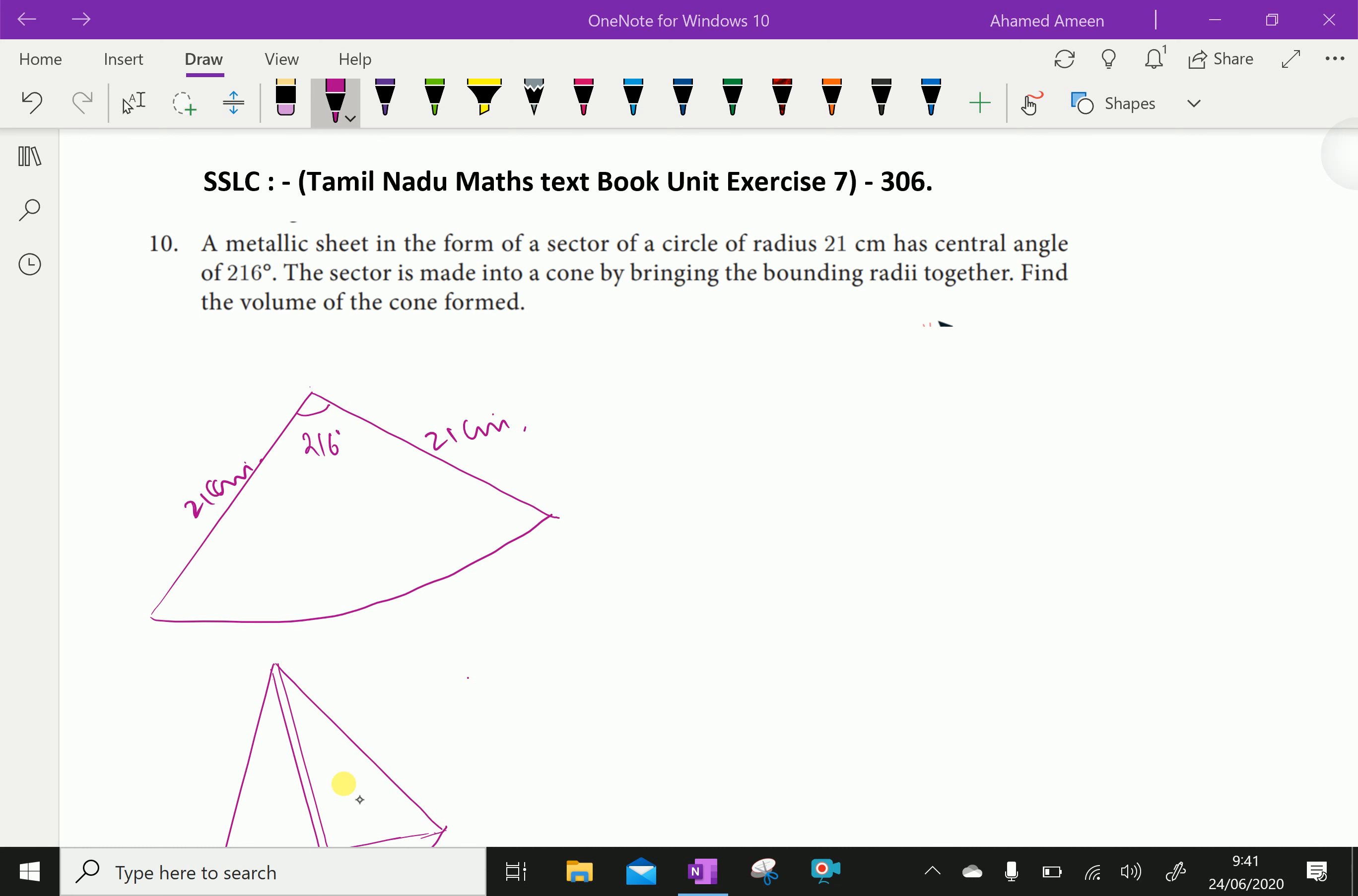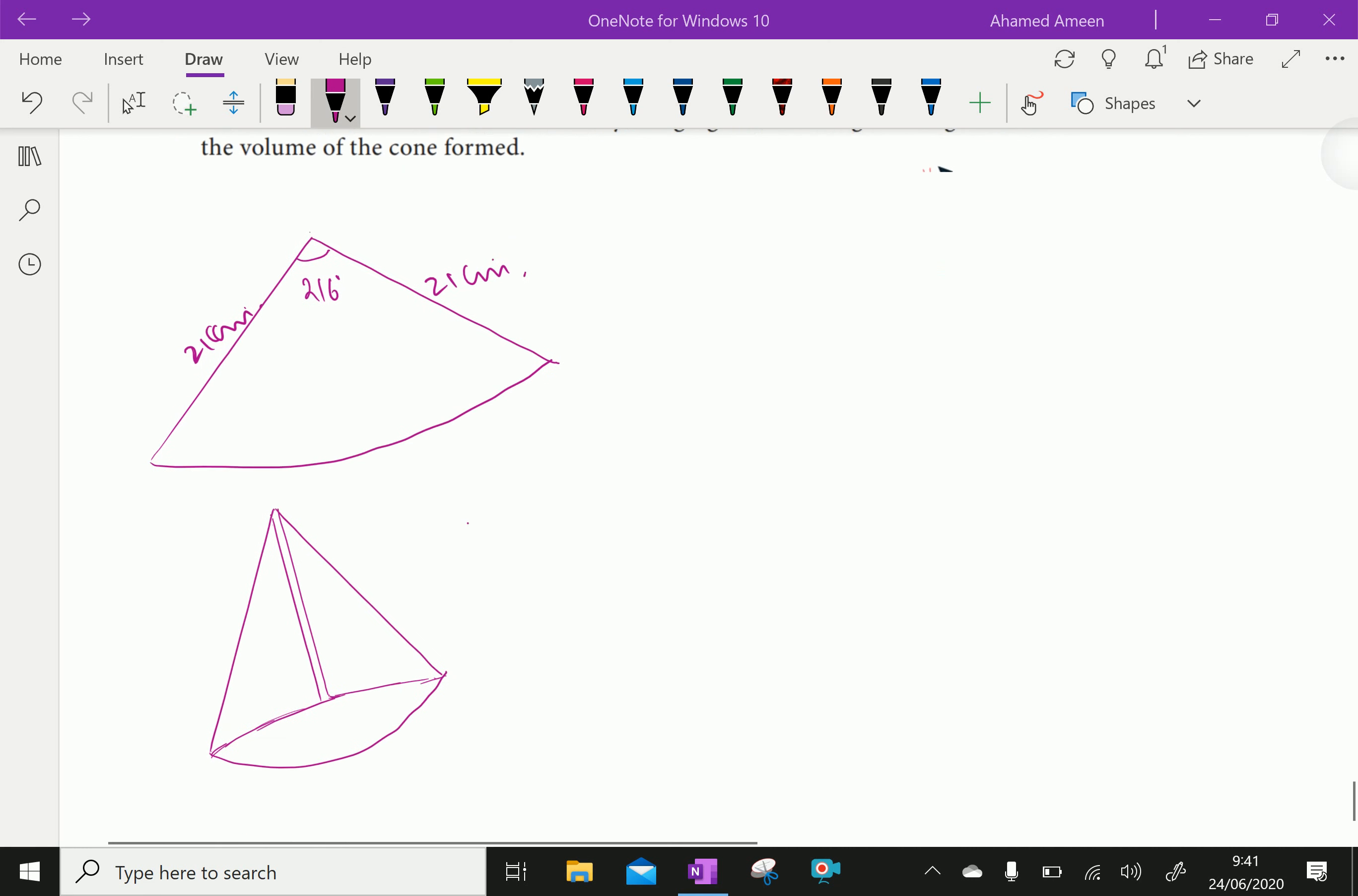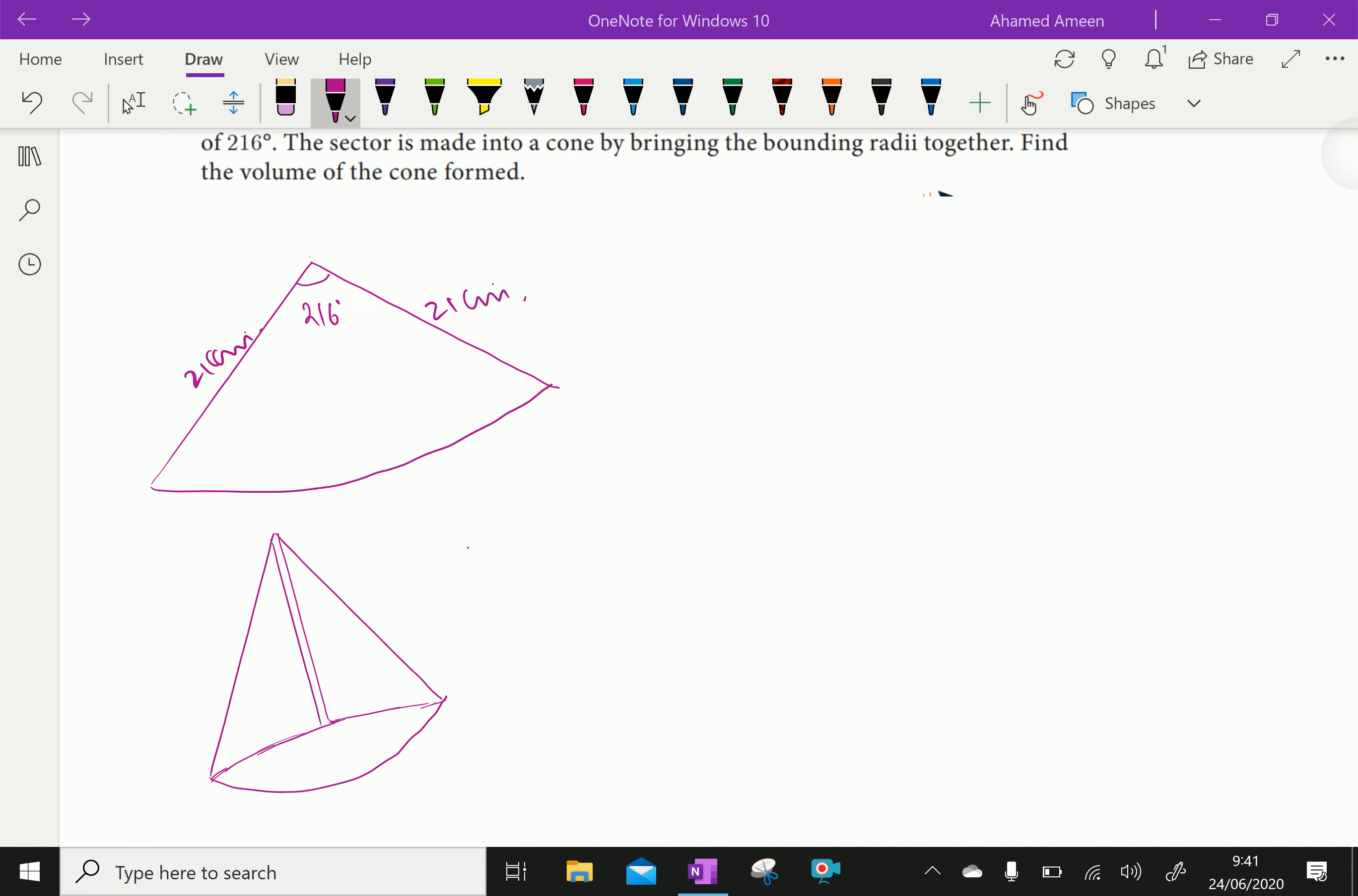The radii or end-to-end is matched and it forms a cone-like. In this, let this arc of ABC here.